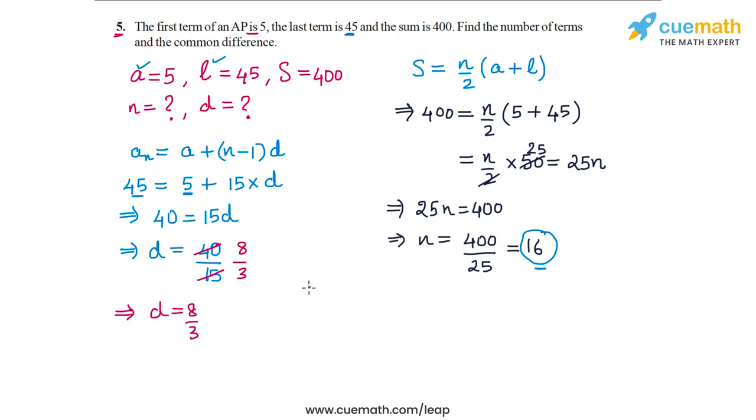So the answer to this question is that the number of terms is 16 and the common difference is equal to 8 by 3.